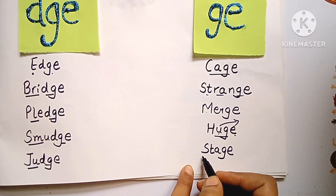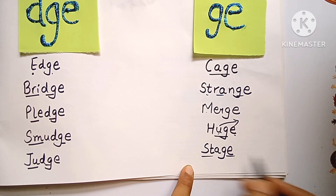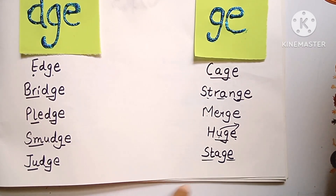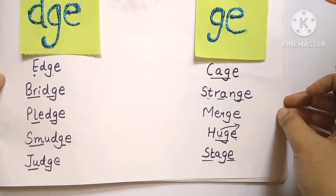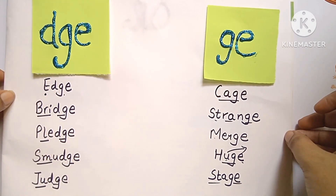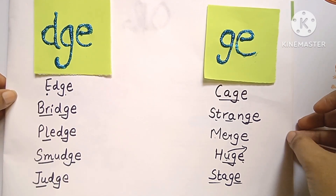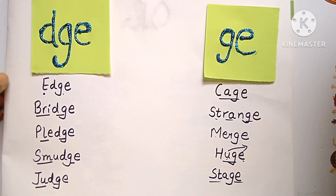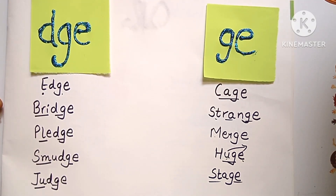Next: stage, stage. All right, तो आज की class में बस इतना ही. मैं मिलती हूं आपसे next class में. तब तक के लिए, bye-bye and thank you so much for watching my video.